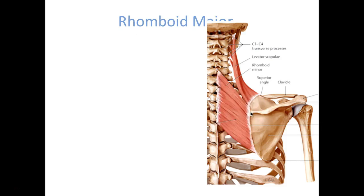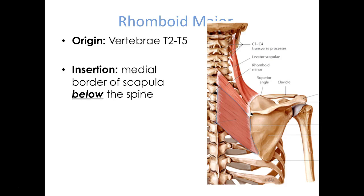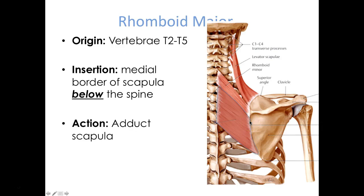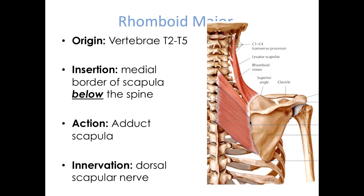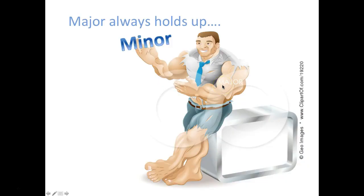Rhomboid major is the larger muscle below rhomboid minor. It originates from vertebrae T2 to T5, and its insertion is the medial border below the spine of the scapula. The action is the same as rhomboid minor — to adduct the scapula. Innervation is branch of the brachial plexus. Remember that major muscles almost always hold up minor muscles, so the major muscle is holding up the minor here.